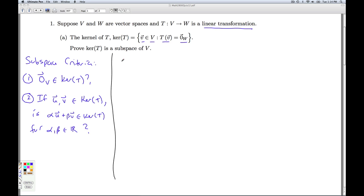To answer question number one, we have a theorem in class that says that since T is linear, T of the zero vector in V is the zero vector in W. That was a theorem we proved in class. Hence, the zero vector in V is an element of the kernel of T. So number one is done.